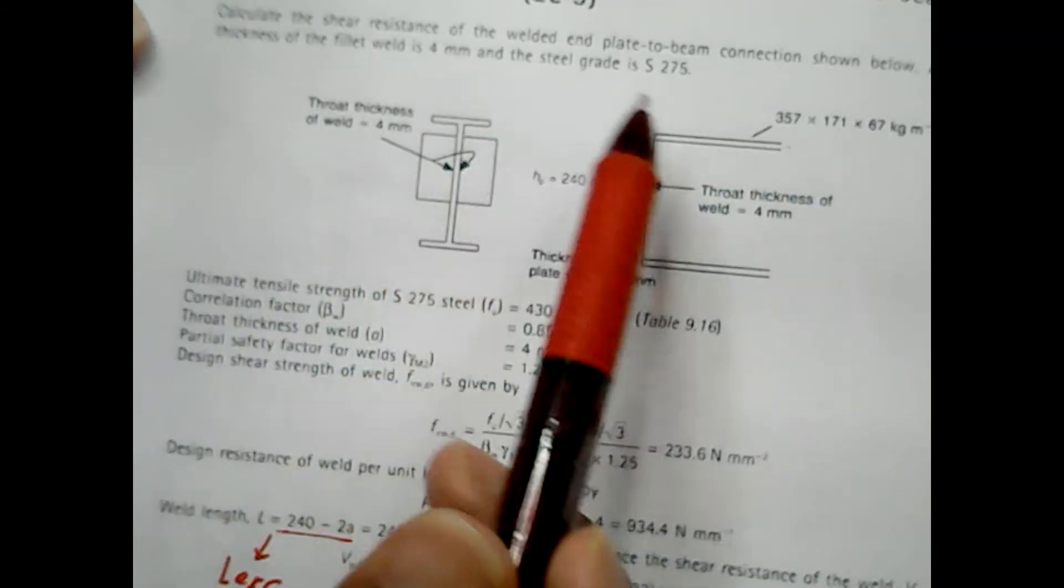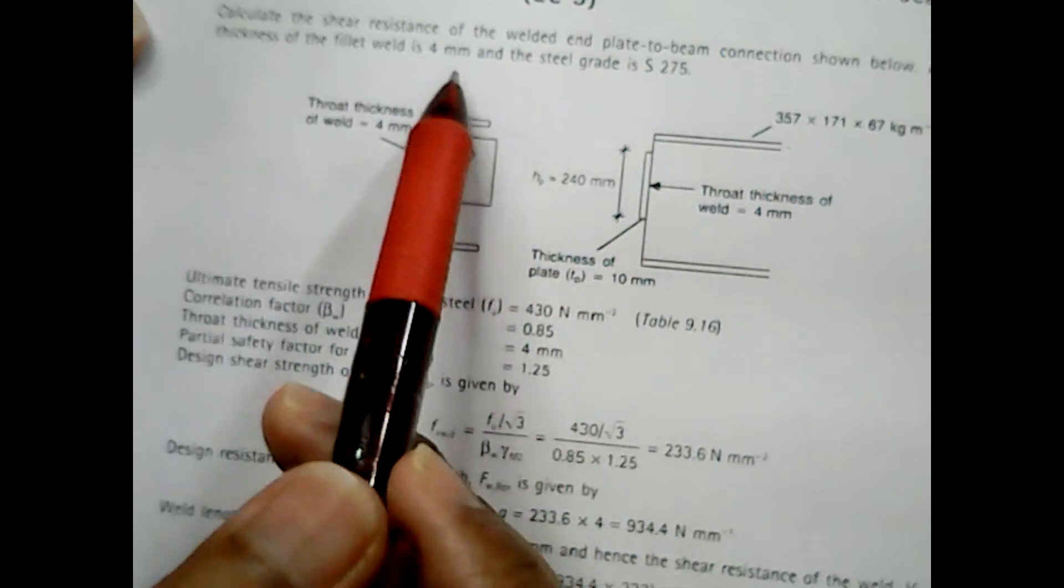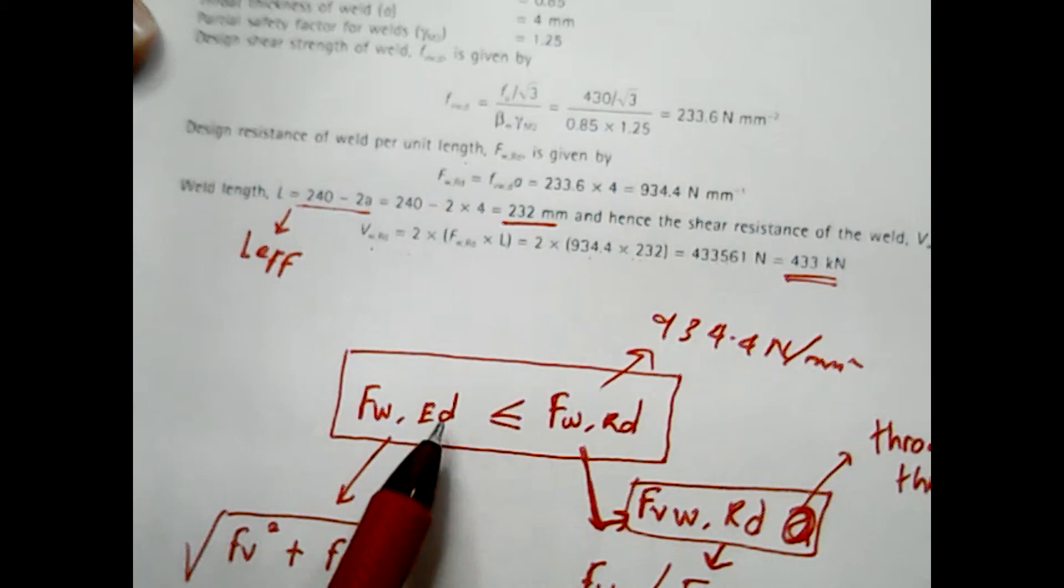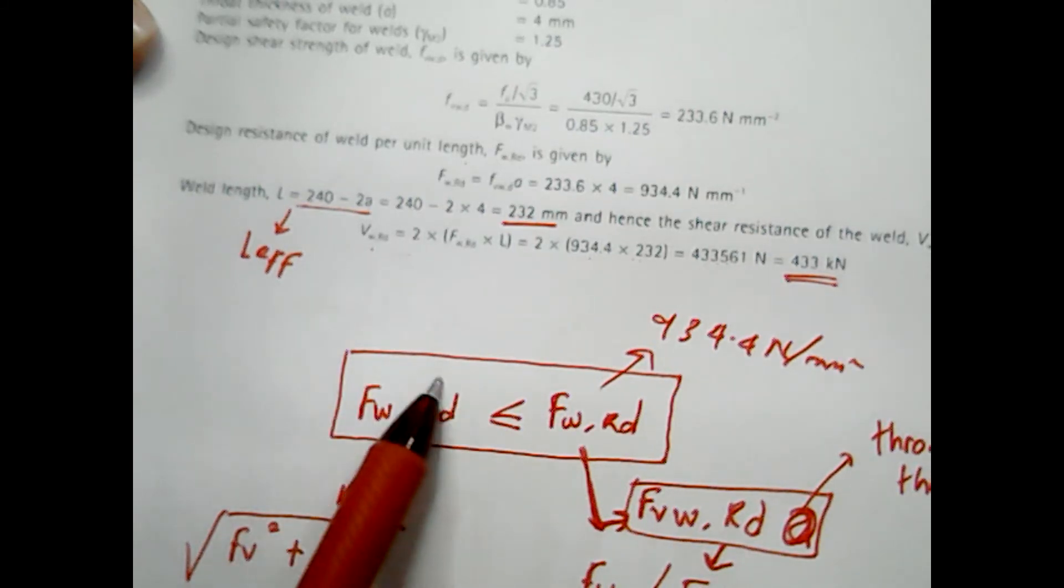Because in this example we don't have any information given on what is the shear that applied to this particular connection, therefore we didn't check for, we didn't calculate for Fw,Ed.